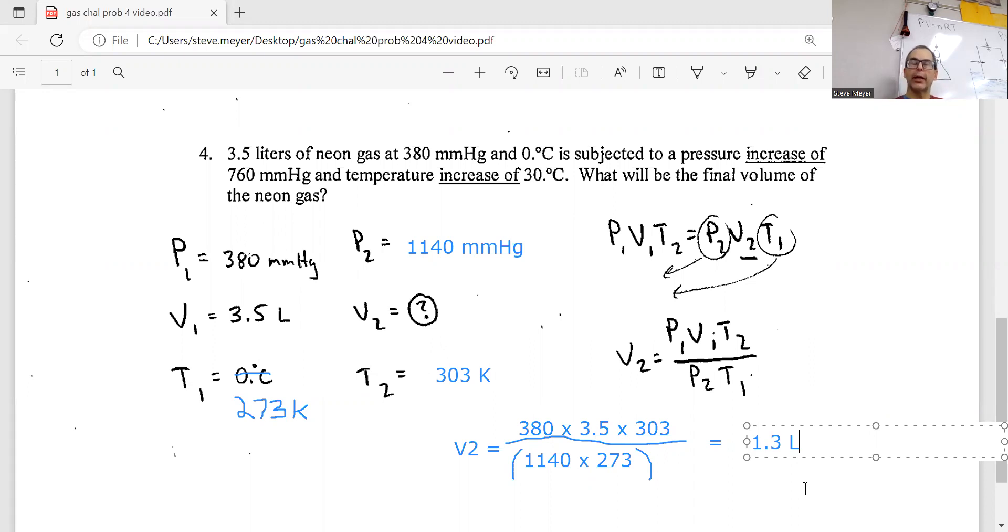So 1.3 liters would be the final answer here. So the hint here is, again, if it says increase of, add it to the original millimeters mercury. Same thing here, increase of, add it to the original temperature. All right, thank you for watching.